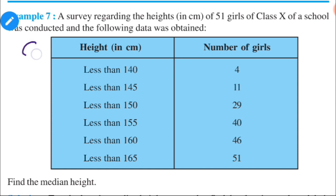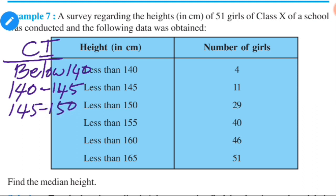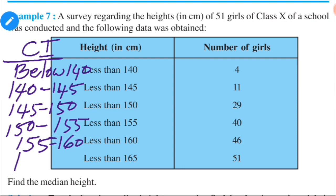Now we can make the class intervals. The first class is below 140. Since the class width is 5, the next classes are: 140 to 145, 145 to 150, 150 to 155, 155 to 160, and the last class is 160 to 165.